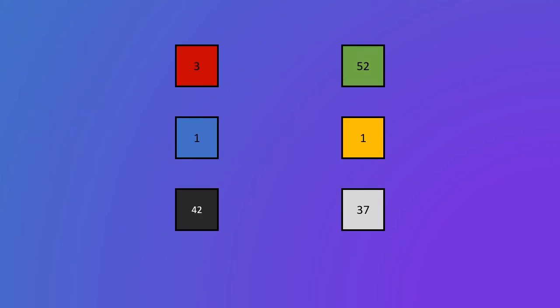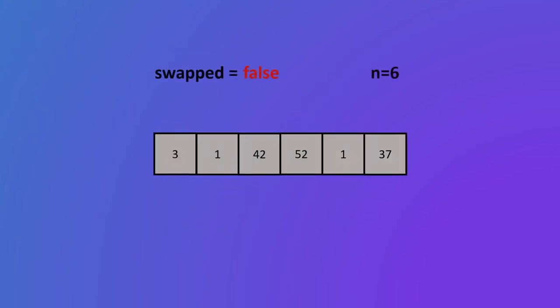Let's say you wanted to place the elements of this array in their correct order. First you would have to look at the length of your array, which is six. Then you will have to compare the first two numbers in your array.